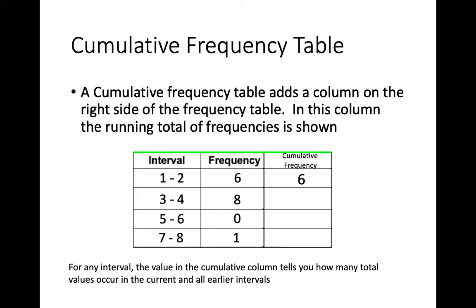But in the second interval, we're going to add that original 6 to the 8 in the current interval and get 14. What this tells us is that there are 14 values from our data set that are in the current and all earlier intervals.